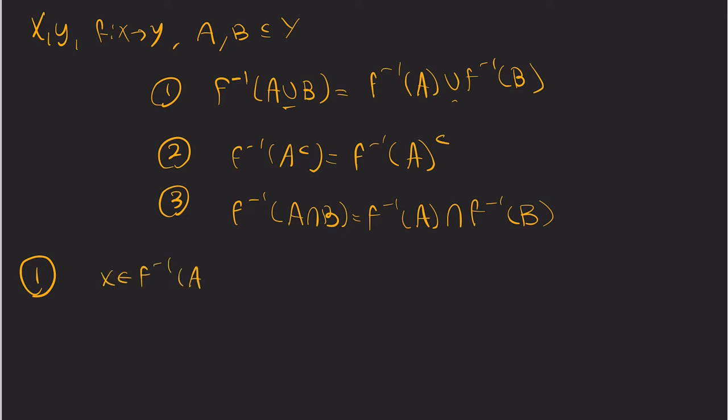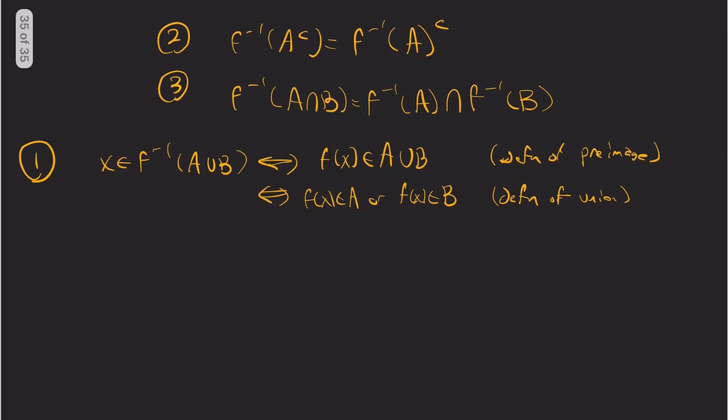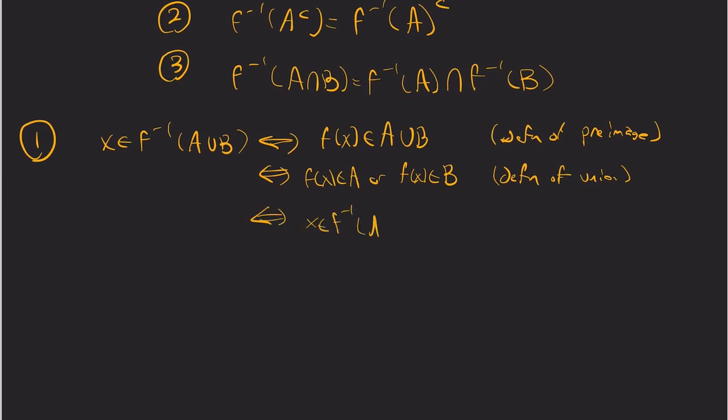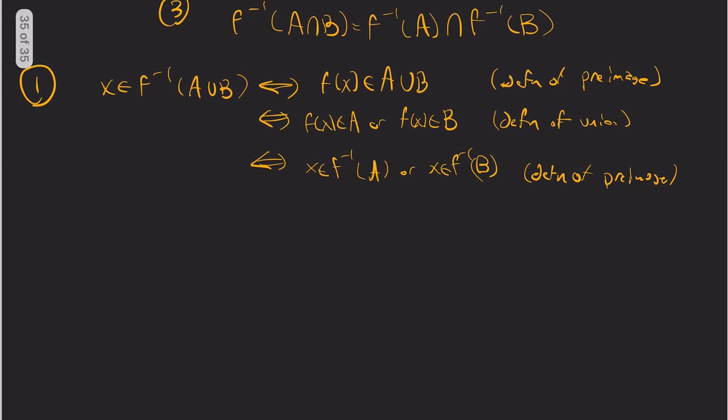So this one's kind of nice because it's just set manipulations. So what does that mean for x to be in the preimage of A union B? Well, by definition, that tells me that f(x) is in A union B. Well, so this is definition of preimage. And this is just definition of union. All right, f(x) is either in A or B. And that's definition of preimage. So notice that because I'm putting definitions here, they're all ifs and only ifs. So I'm essentially unraveling definitions. That's why I don't have to do subset, subset as the proof outline. And my logic will still be solid here.